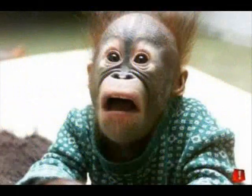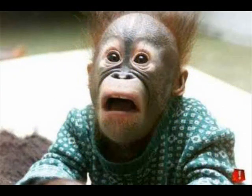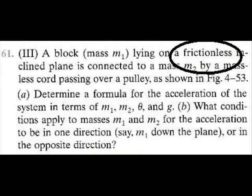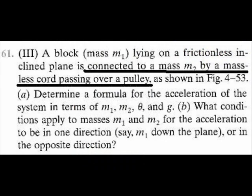Good job! We read through the problem. Now, let us see what we are given. No numerical values are known except for little g, 9.8 meters per second squared. The inclined plane is frictionless. The words connected to a mass M by a massless cord passing over a pulley tell us that the tension is the same for both strings and that they have the same acceleration.